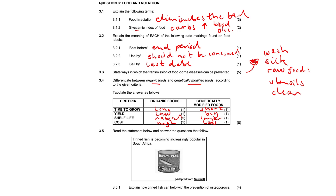3.5 — tinned fish is becoming increasingly popular in South Africa. Explain how tinfish can help with the prevention of osteoporosis. Tinfish with bones is a good source of calcium, which is required for building strong bones, increasing bone density, and therefore decreasing bone loss. Pilchards, which is the fish here, are a typically oilier fish and a good source of vitamin D and phosphorus, required for the absorption and incorporation of calcium into the bones. The protein in the fish is necessary for normal collagen synthesis, which assists in preventing osteoporosis.